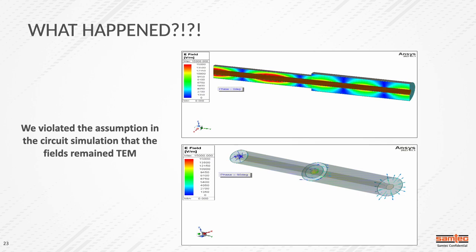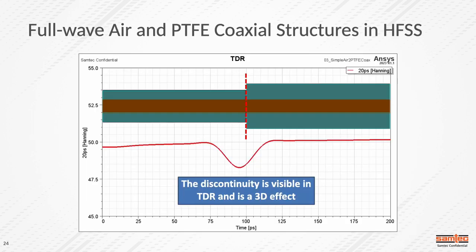A circuit simulation tool assumes it's operating in TEM — it doesn't have any knowledge of the field behavior of the structure, where HFSS does. Coming into the air-filled coax are TEM waves; coming out of the dielectric-filled coax are also TEM waves. But at that interface between the two, there's non-TEM behavior. Even though we had a 50-ohm section going into a 50-ohm section, this change in geometry and change in materials actually did introduce some discontinuity. We can see this in the TDR plot showing a dip in the impedance profile.